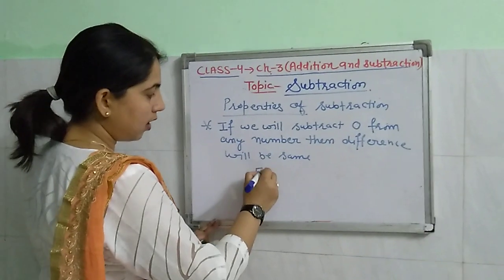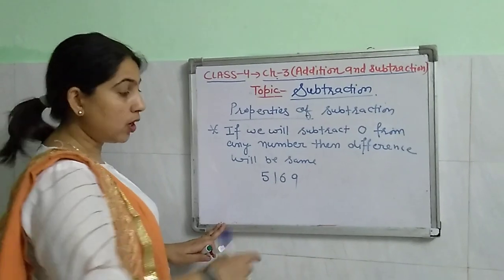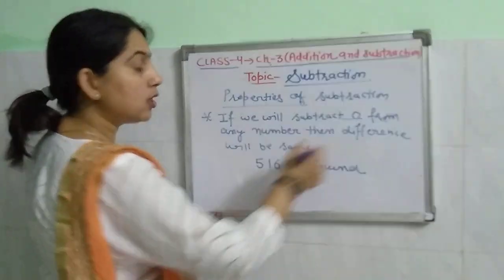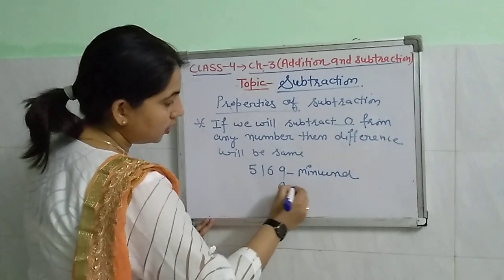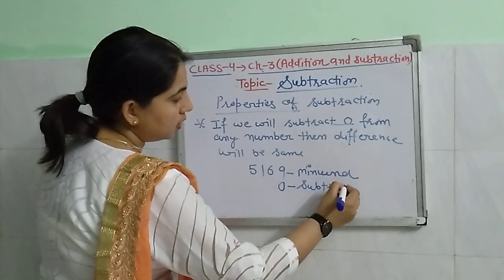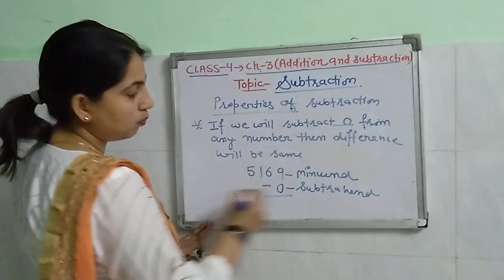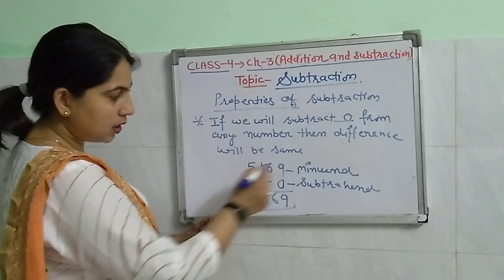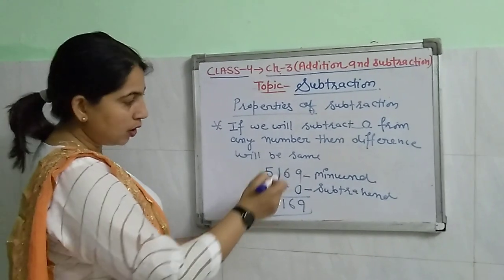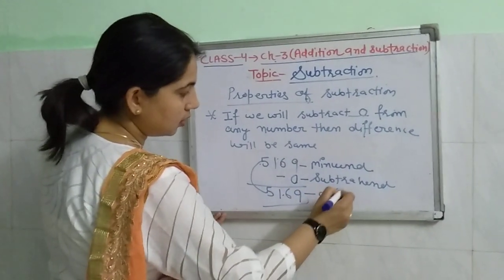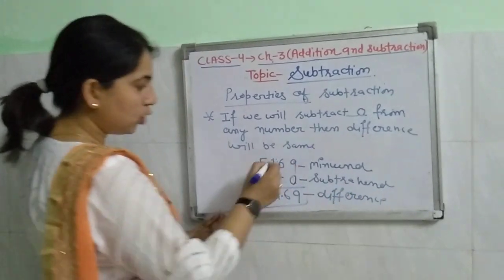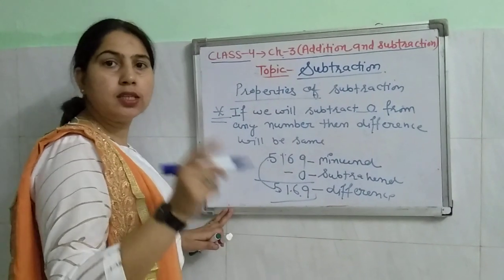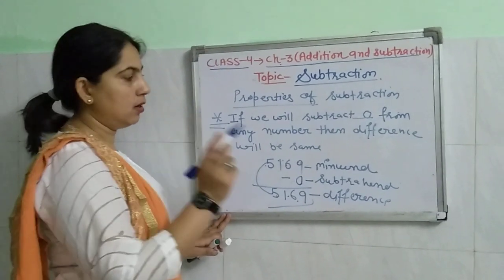Take any number like 5, 1, 6, 9 — this is the minuend. And we have to subtract 0, so 0 is the subtrahend. So 9 minus 0 is 9, 6 as it is, 1 as it is, 5 — the answer is the same as the minuend. So the first property is: if we subtract 0 from any number, then the difference is the number itself.